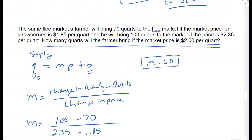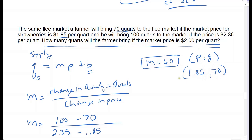I need to find my y-intercept, which means I need a point—and they actually give me two. I'll pick the first one. Be careful: mind your P's and Q's. The quantity is 70 and the price was $1.85. So quantity 70 goes in for the Q part, slope is 60, and price $1.85 goes in for the P part.